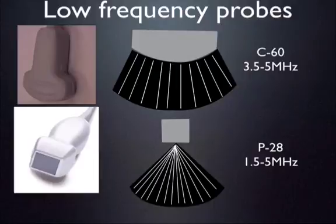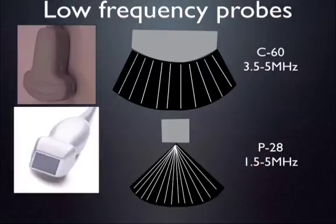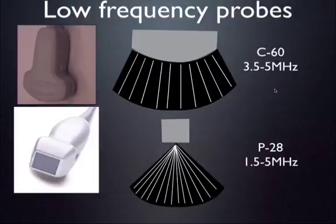Low frequency probes allow you to look deeper, but the resolution is usually a bit worse. The probe commonly called the curved linear probe — some call it the abdominal probe or the C60 probe because it's 60 millimeters along the scan face — produces sound waves in a curved fashion. It is a 3.5 to 5 megahertz probe, most commonly used for the abdomen.